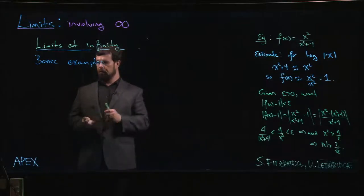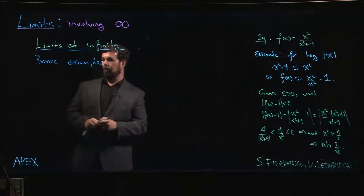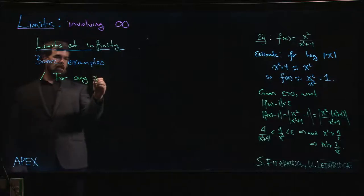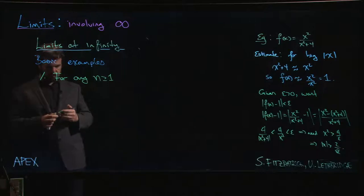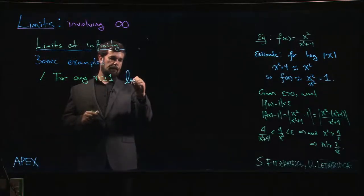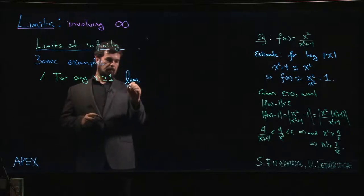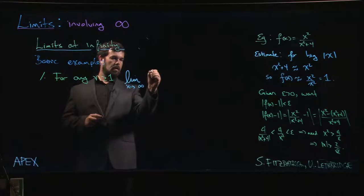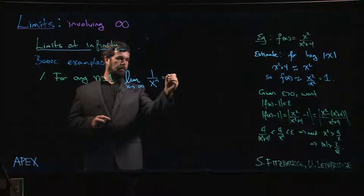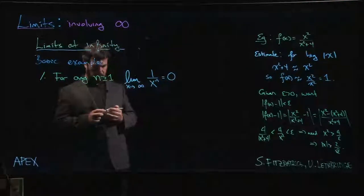The first one is the following: for any power bigger than one, if we do the limit as x goes to infinity of 1 over x to that power, this limit will always be 0, and it'll be true at both plus and minus infinity.